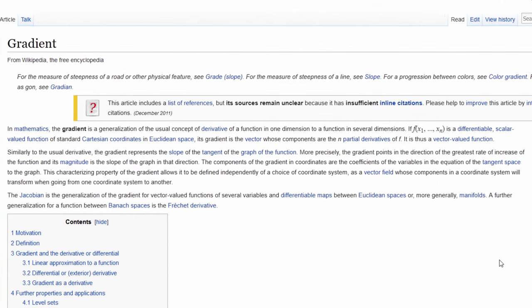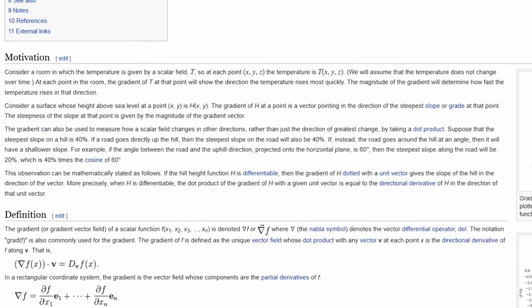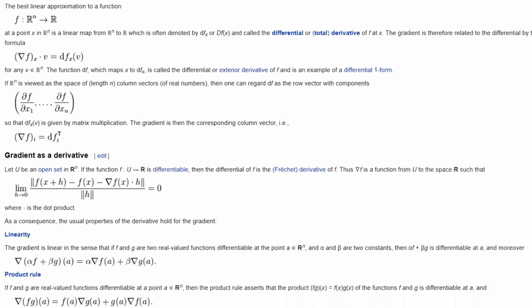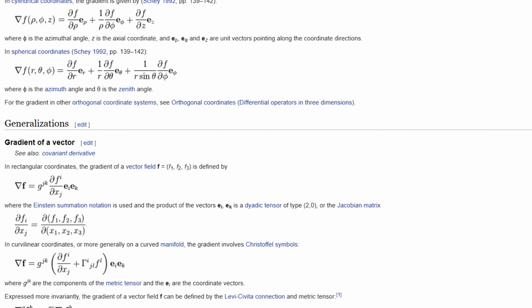In mathematics, the gradient is a generalization of the usual concept of derivative of a function in one dimension to a function in several dimensions. If f of x1 to xn is a differentiable, scalar-valued function of standard Cartesian coordinates in Euclidean space, its gradient is the vector whose components are the n partial derivatives of f. It is thus a vector-valued function.